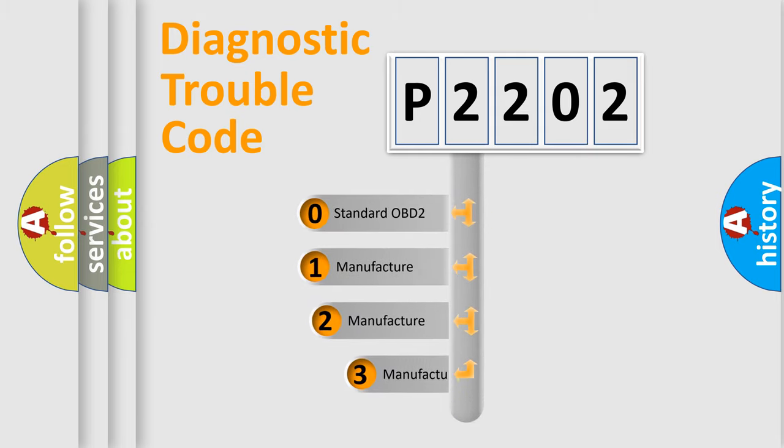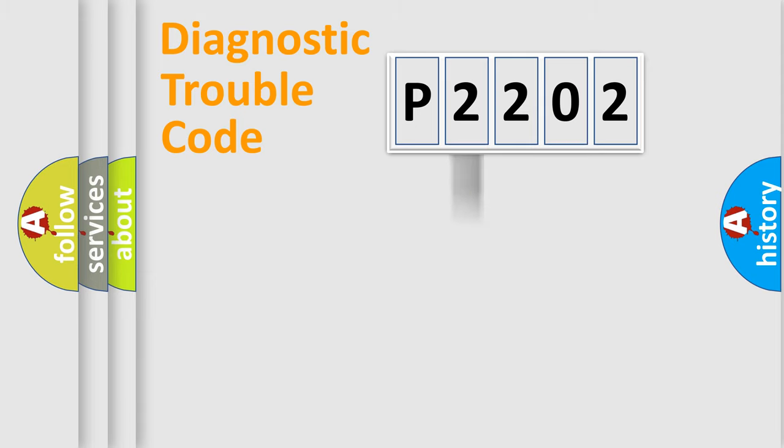If the second character is expressed as zero, it is a standardized error. In the case of numbers 1, 2, or 3, it is a more prestigious expression of the car specific error.